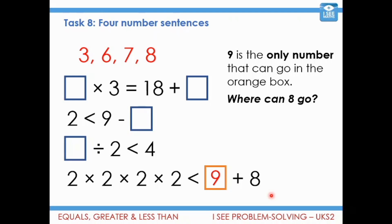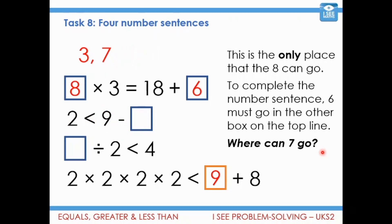So now, well, where can the 8 go? It was my next line in thinking. And actually, it can't go here, because 8 divided by 2 equals 4. It also can't be in here, because 9 subtract 8 is 1, and that would make this incorrect, because this side has got to be more than 2. So the 8, well, it actually has to go here. It's the only place it can go. 8 times 3 is 24, and 18 plus 6 is also 24. So it also shows me the position of the 6.